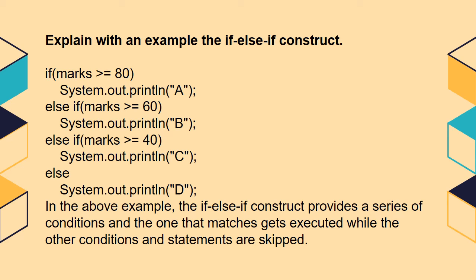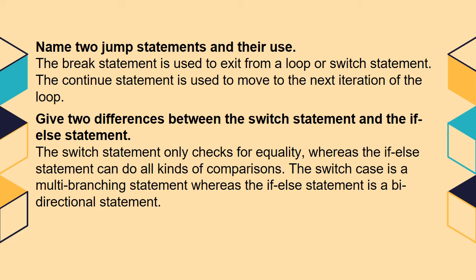Explain with an example the if-else-if construct. If marks is greater than 80, print A. Else if marks is greater than or equal to 60, print B. If marks is greater than or equal to 40, print C. Else, print D. In the above example, the if-else-if construct provides a series of conditionals, and the one that matches gets executed while the other conditions and statements are skipped.